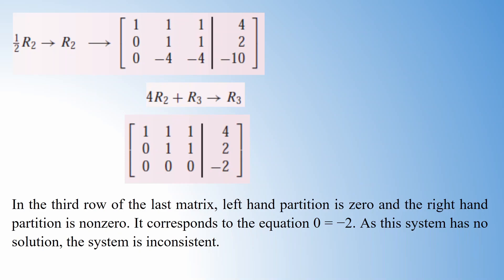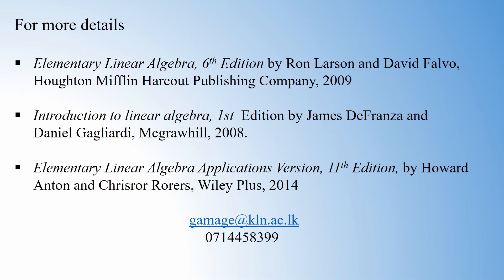The third row of the final matrix has a left-hand partition of 0 and a right-hand partition of -2, corresponding to the equation 0 = -2. Therefore the system does not have any solution — the system is inconsistent. That is how we identify when a system does not have a solution through elementary row operations: convert the augmented matrix to row echelon form, and if any row has a zero left-hand partition with a non-zero right-hand value, the system is inconsistent. In the next lesson, we will discuss how to identify infinitely many solutions and unique solutions. Thank you.